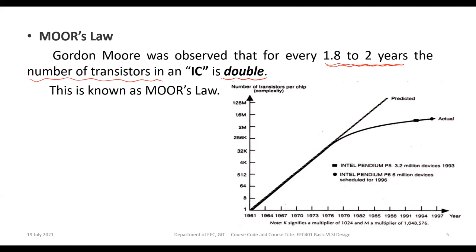Because of the availability of miniaturization in semiconductor materials, Moore observed that for every 2 years the number of components on an IC will be doubled. More transistors means more functionality can be implemented. This is popularly known as Moore's Law in the VLSI field: the number of transistors on an integrated circuit doubles every 2 years.